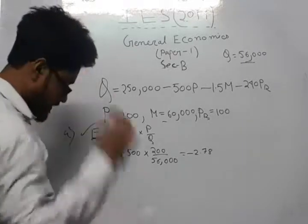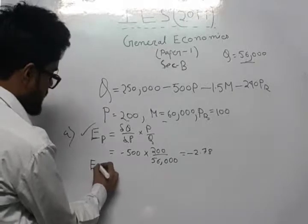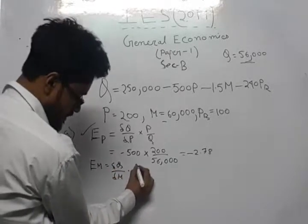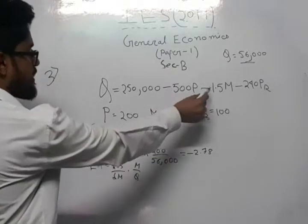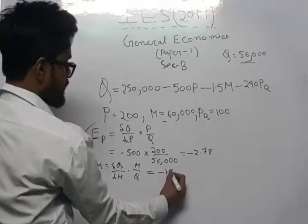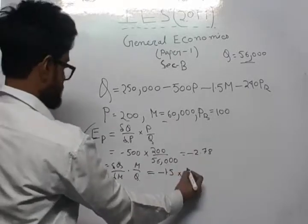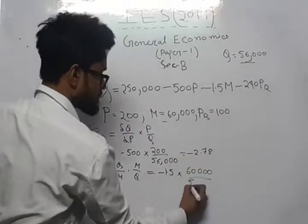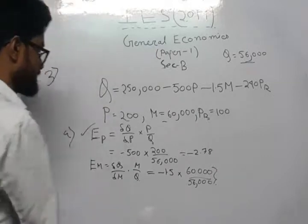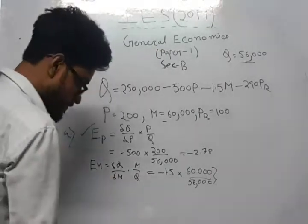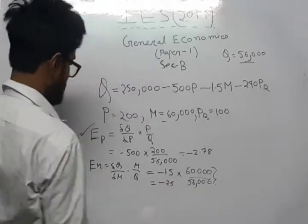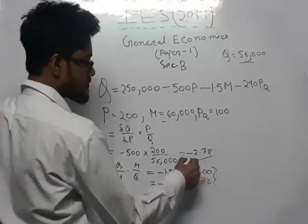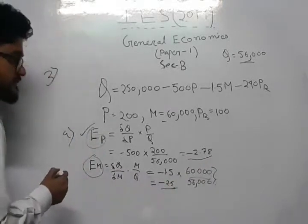Next, we are asked to find the income elasticity of demand, EM. The formula is change in Q by change in M, multiplied by M by Q. Differentiating Q with respect to M gives minus 1.5. With M = 60,000 and Q = 56,000, we get EM equals minus 1.607.